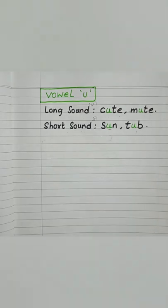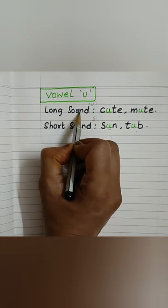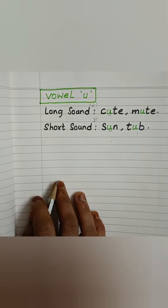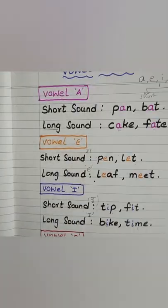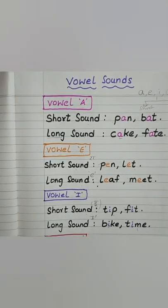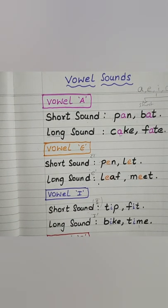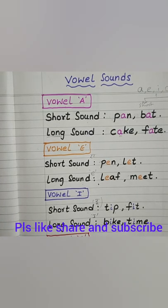Short sound is nothing but reading the letter sound. Long sound is reading the letter with its letter name. So these are the short sound and long sound of vowels. If you feel my videos are helpful, please like, share, and subscribe. Thank you so much for watching.